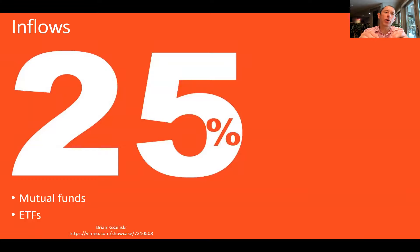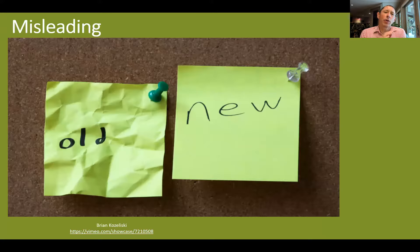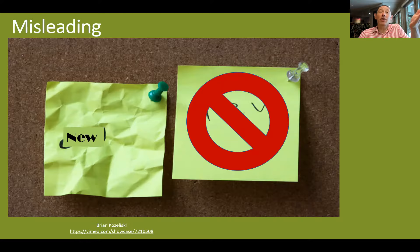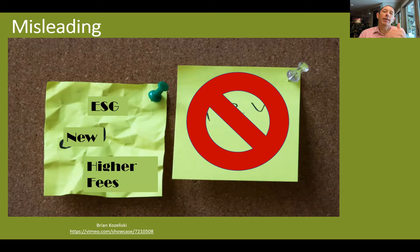Part of the problem is that right now, 25% of inflows — new money coming into mutual funds and ETFs — is going into some kind of sustainable investing, or at least investments labeled as sustainable investing. The issue is whether that's actually good for investors, because these sustainable investment products are being marketed as something new when they're really not. It's the same old investment they've always been doing — they've just slapped a new label on it saying it's an ESG product. And what you're really getting from those two new labels is higher fees: same old investment, higher fees. Not the best situation for investors.